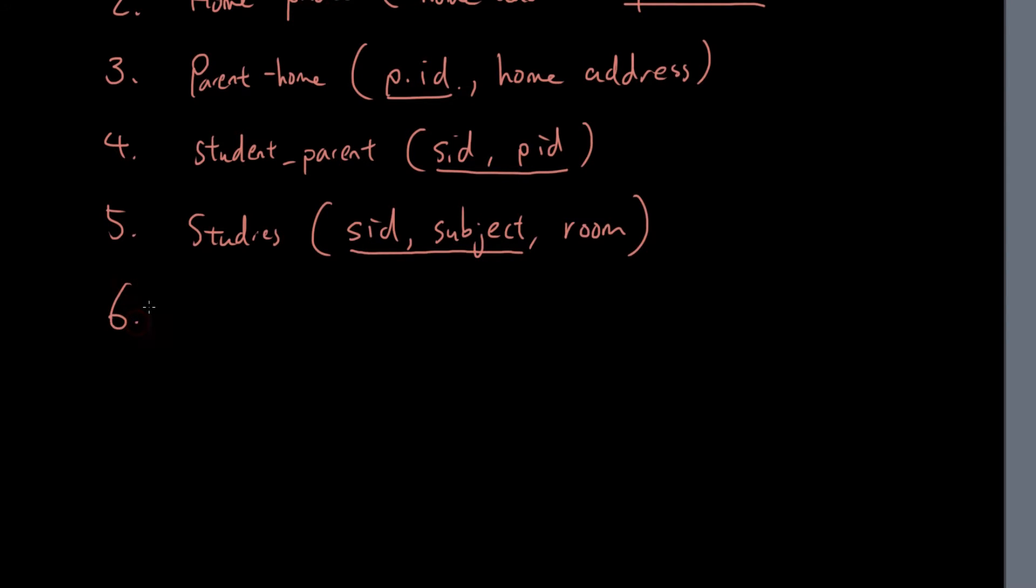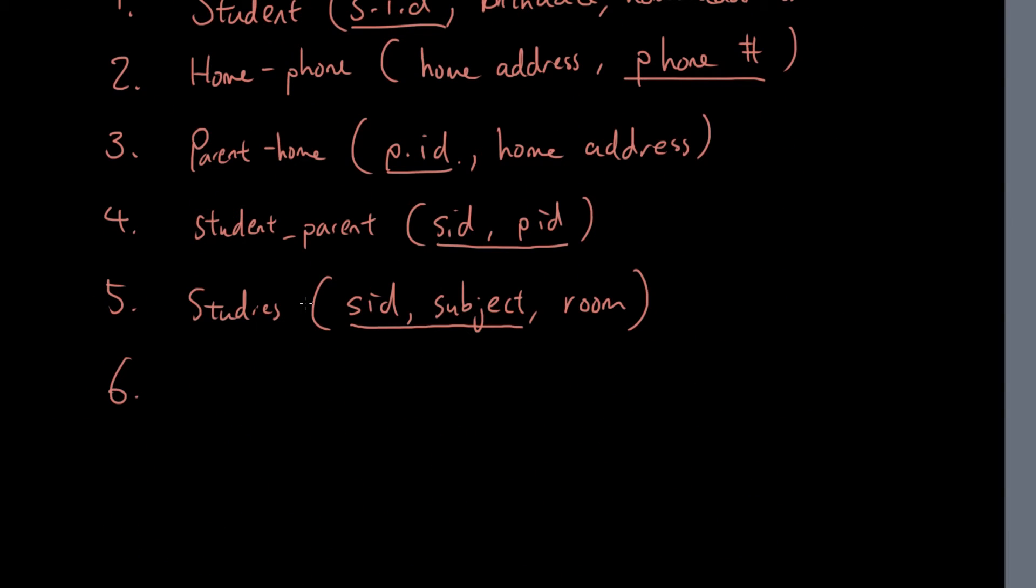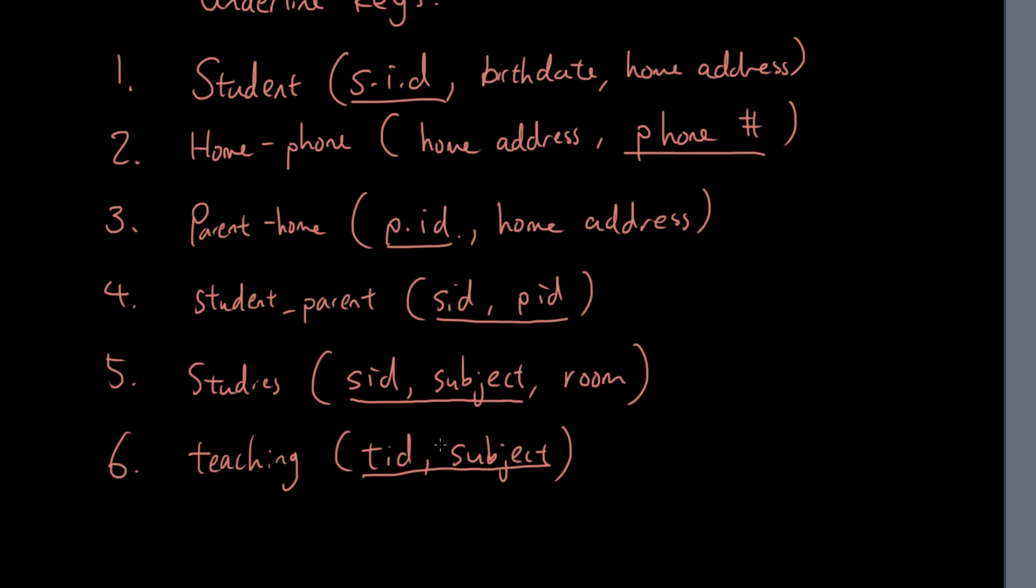And then number six is the teaching. So we got the teacher ID and the subject. And then again, both of them combined together can form the key because a teacher could teach multiple subjects, a subject could have multiple teachers and so on. So this would be my database. Each of these represents a table. And then the tables are obviously linked together when you have the same fields.